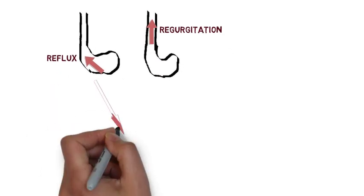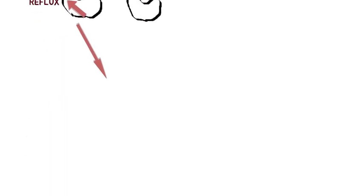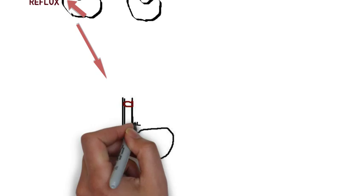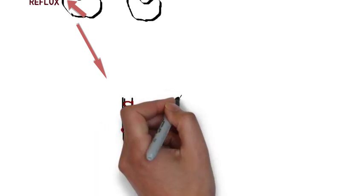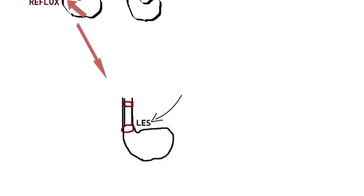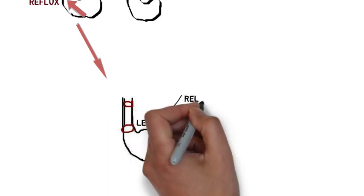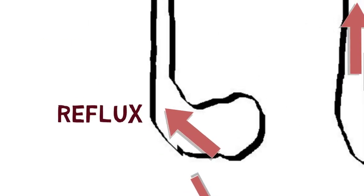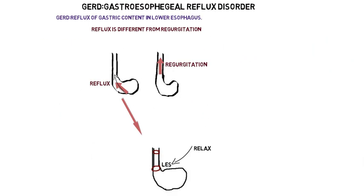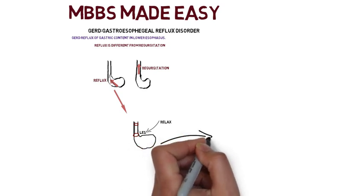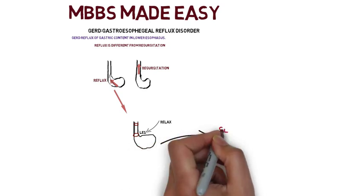Basically, in our esophagus there is a lower esophageal sphincter. What happens in GERD is there is increased relaxation of the lower esophageal sphincter. Due to this relaxation, there is increased upward movement of stomach content into the esophagus. Now let's discuss the risk factors.